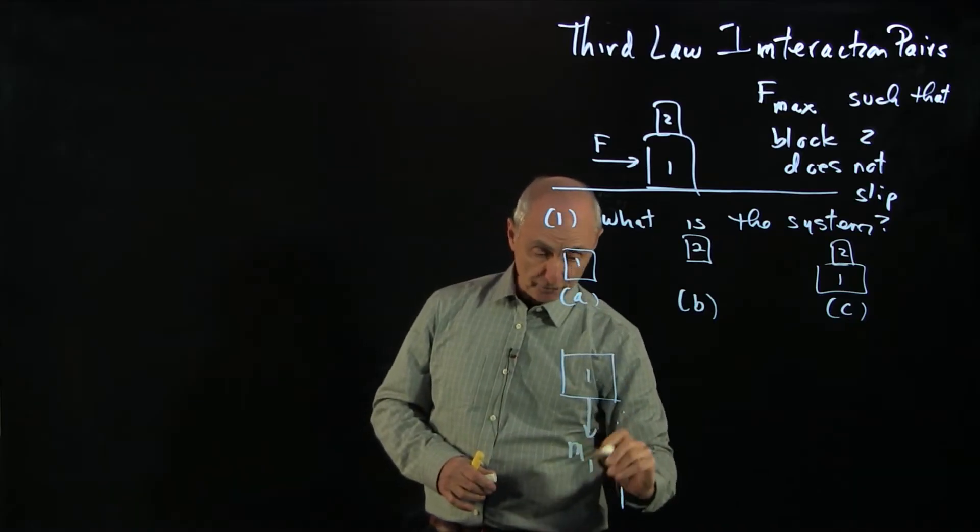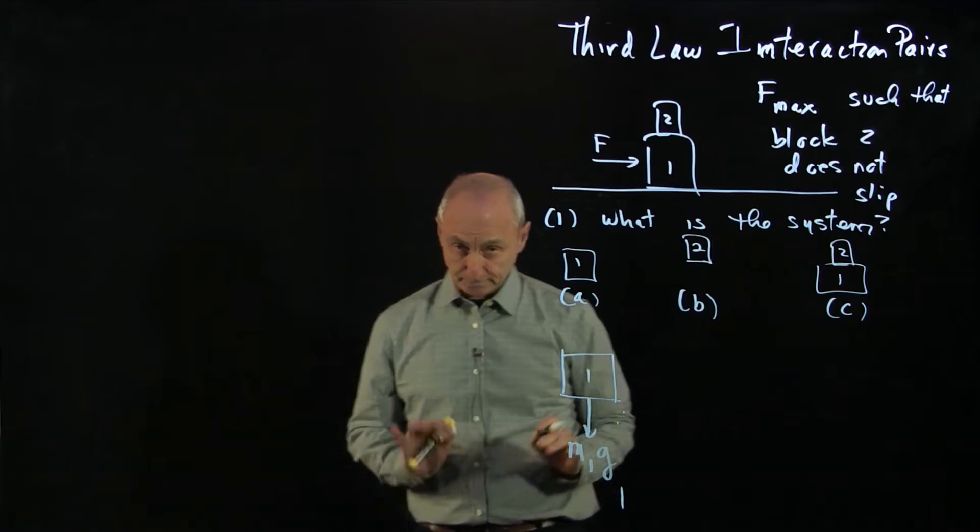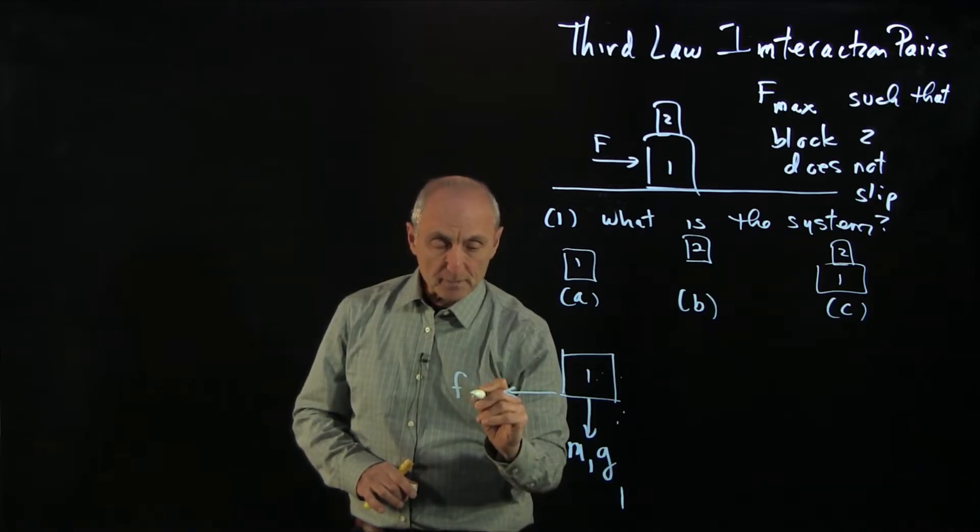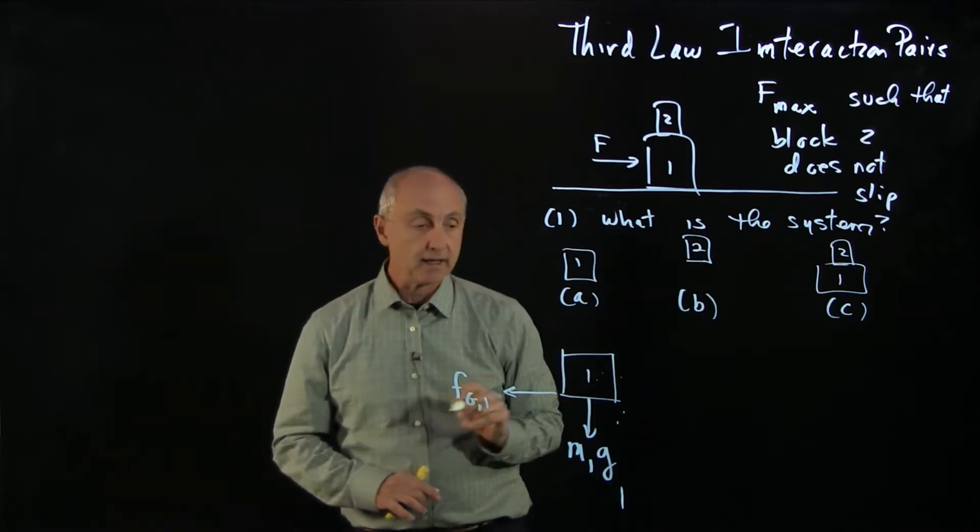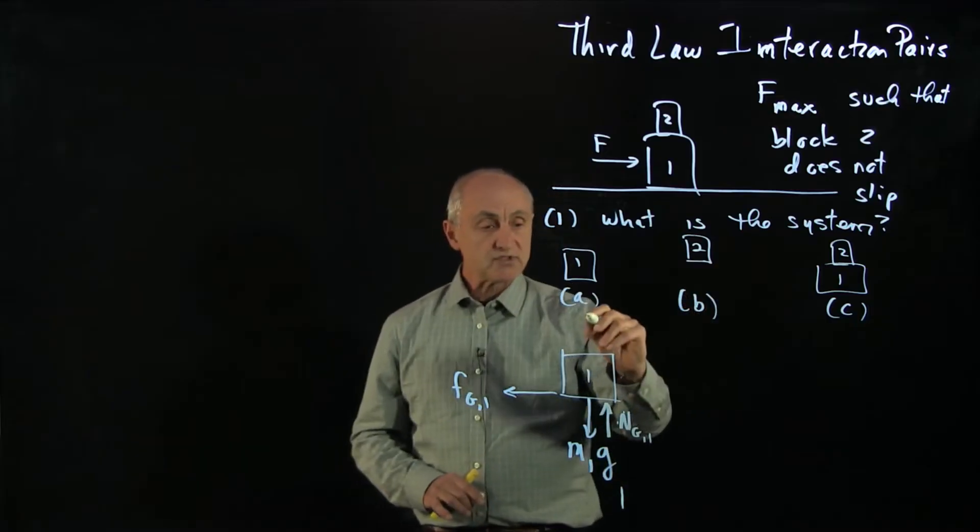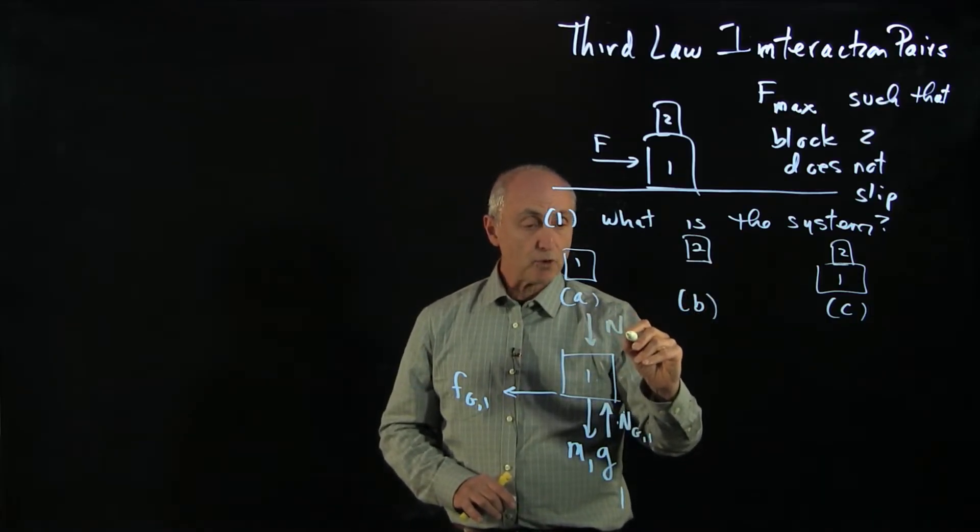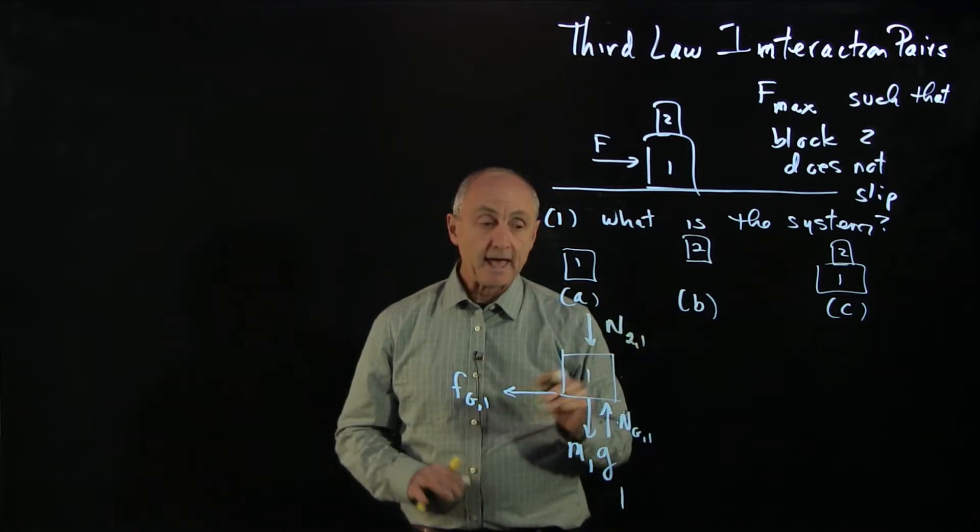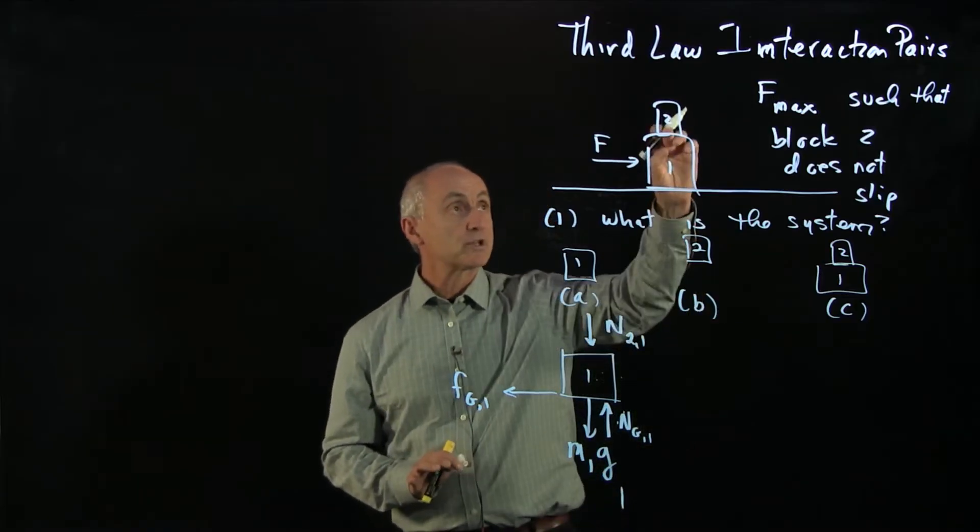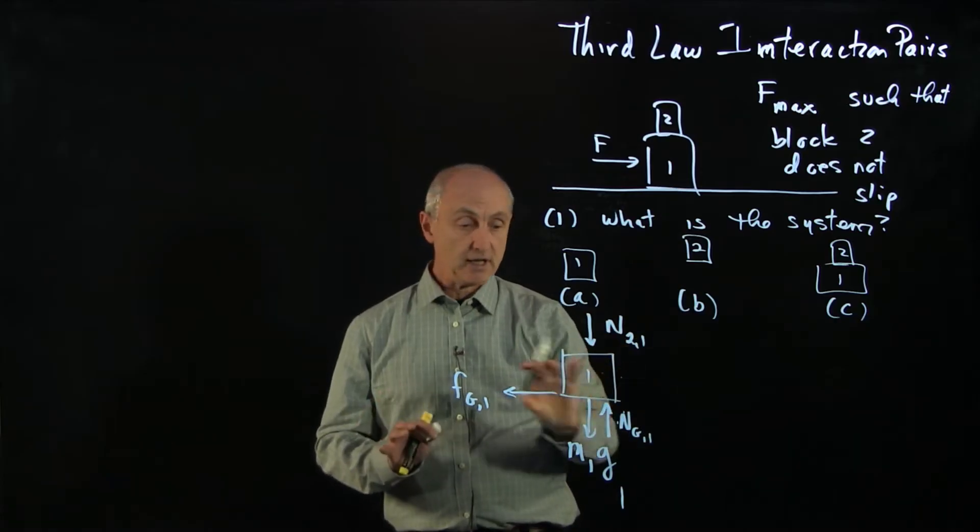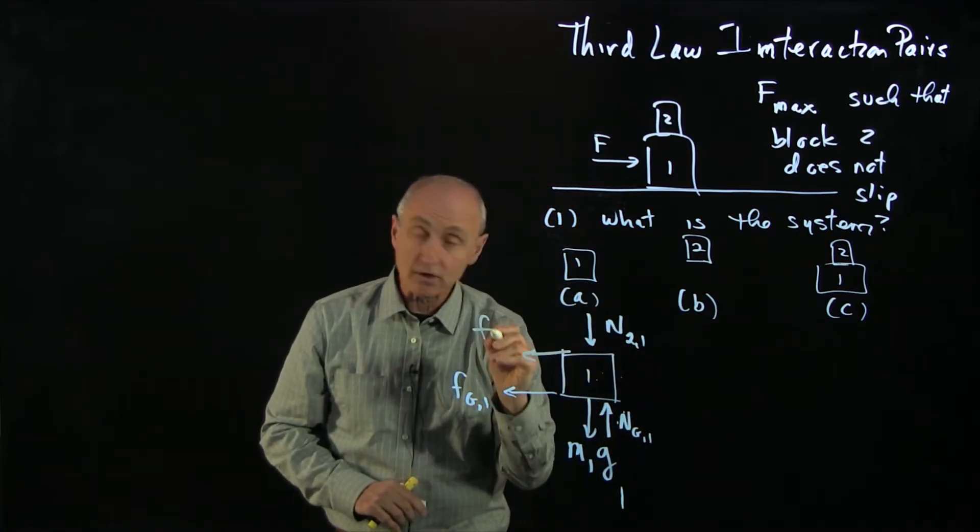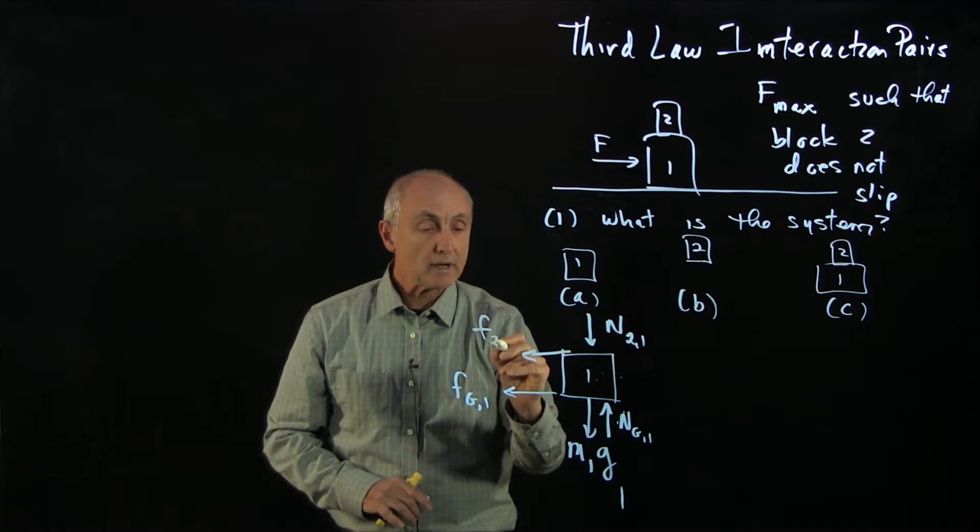First off, we know there's gravitational force, and the Earth is the other pair there, which we're not drawing. There is friction between the ground and block one. There is the normal force of the ground on block one. Block two is sitting on block one. So there's a normal force of block two on block one. And finally, as you push block one, there is a friction force between block two and block one that's opposing the fact that block one is being pushed forward. So we have a friction force here between blocks two and one.